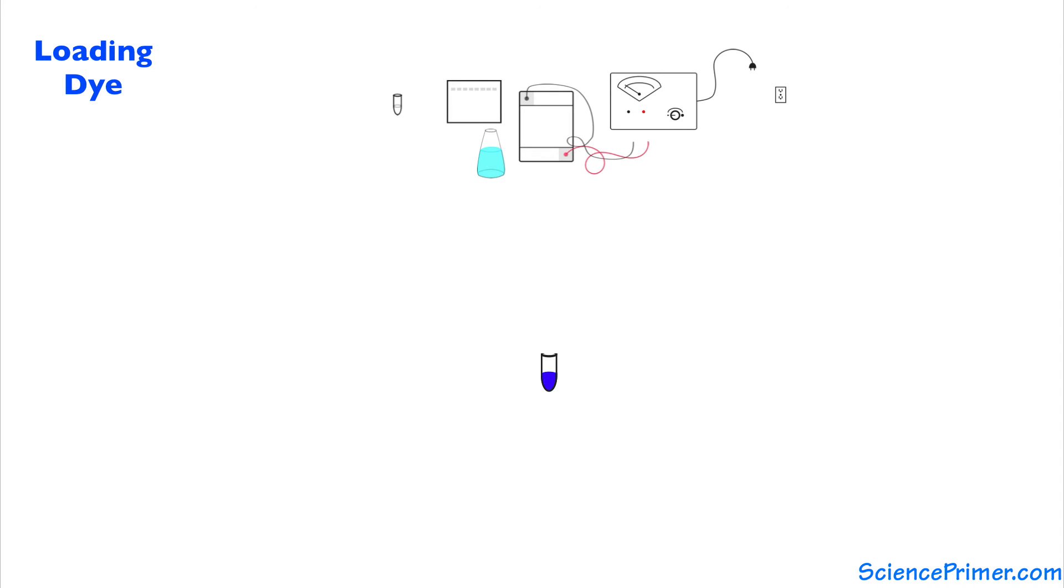At the pH range in which the gels are buffered, many dyes have a negative charge so that they migrate in the same direction as the DNA. This has the additional benefit of providing visual indication of the progress of the DNA migration. This is extremely useful because the DNA itself is not visible during the running of the gel.